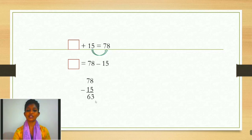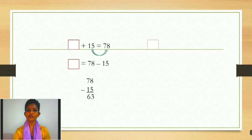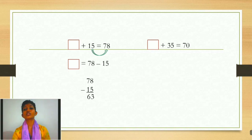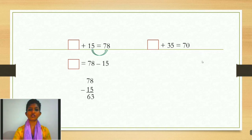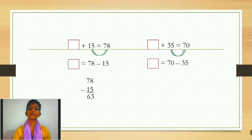Aap hum carry and borrow waala sum dekhenge. The question is: box plus 35 is equals to 70. Same method — I will take this 35, which is with a plus sign, over to 70. Toh humko milega: box equals to 70 minus 35.